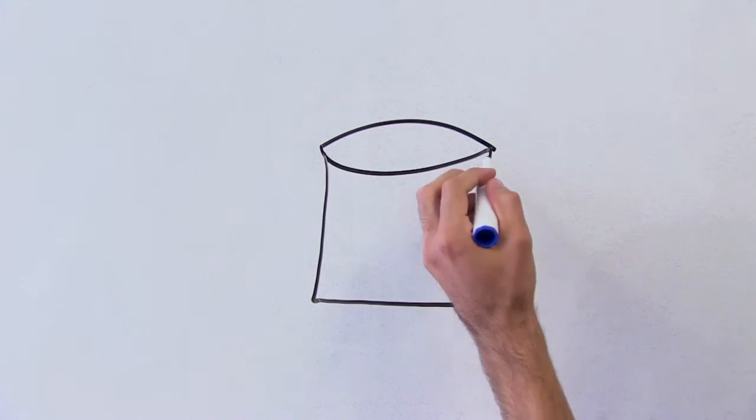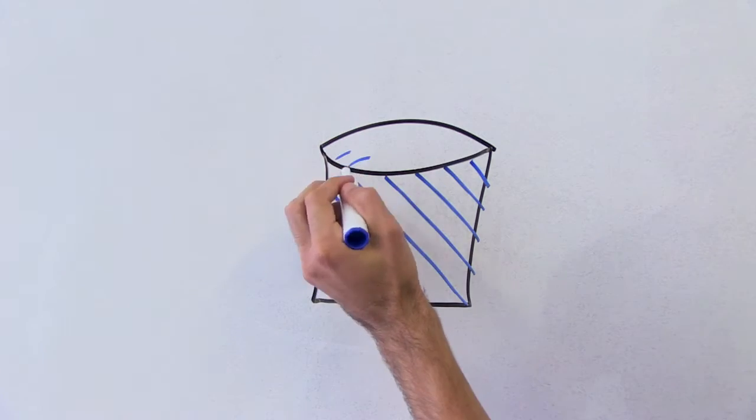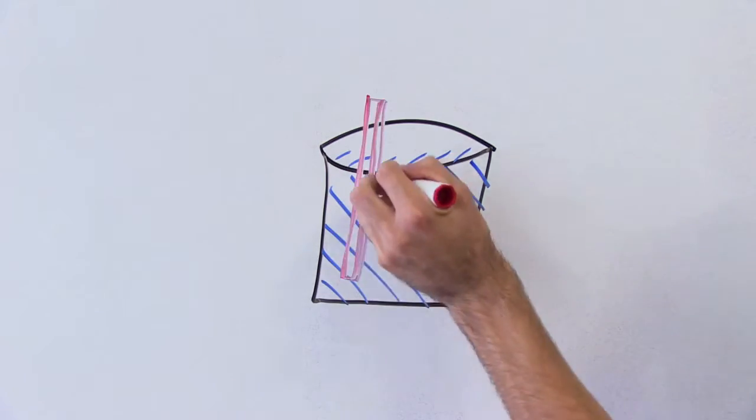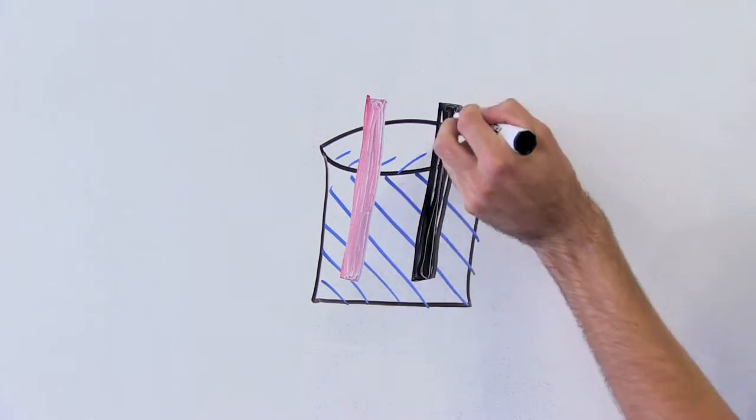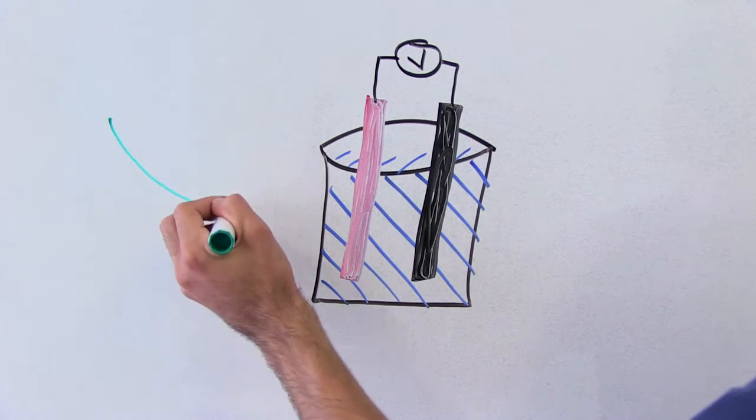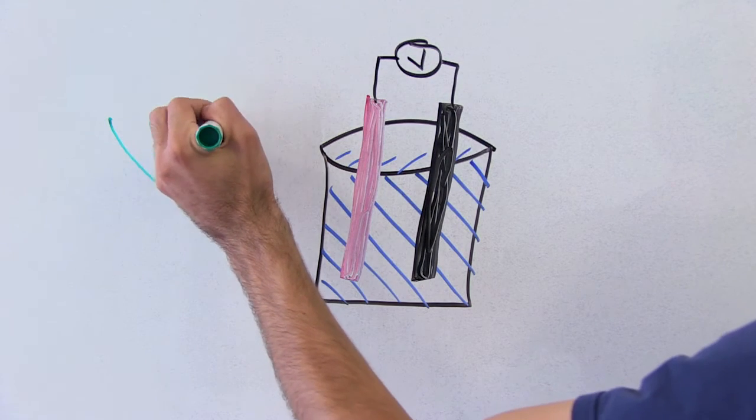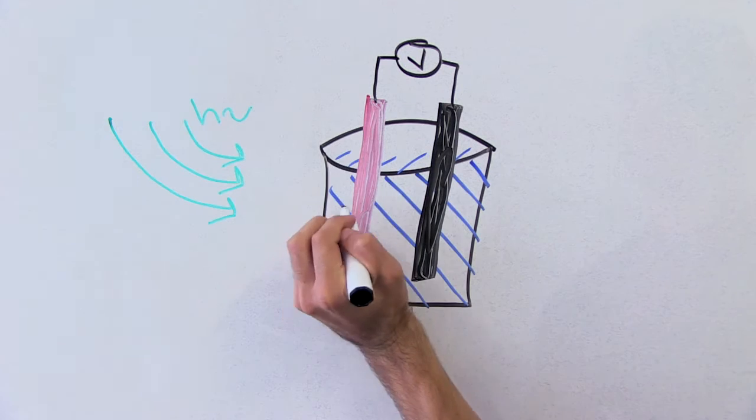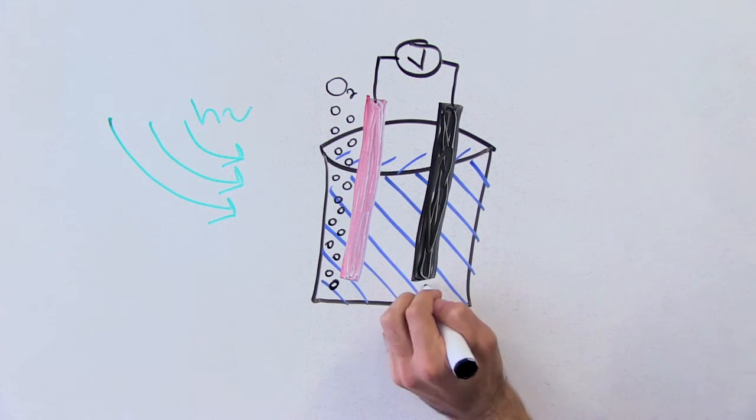Here we have a beaker of water that we want to split into hydrogen and oxygen. We add two electrodes, one of which is a semiconductor. When we shine sunlight on the semiconductor, we generate charge. And we can use that charge to generate oxygen over here and hydrogen over here. So this semiconducting electrode has to do everything that a solar cell material would have to do, as well as being stable in water.